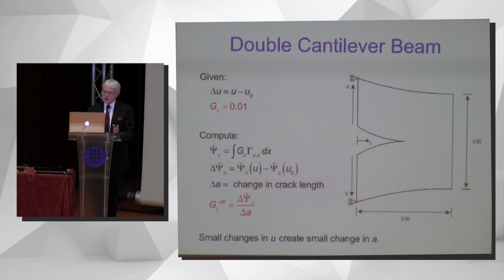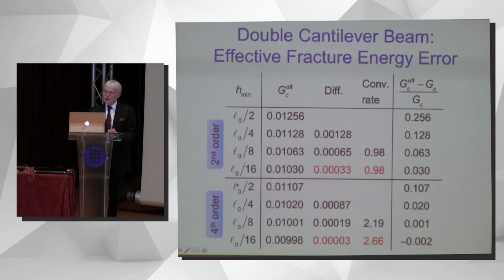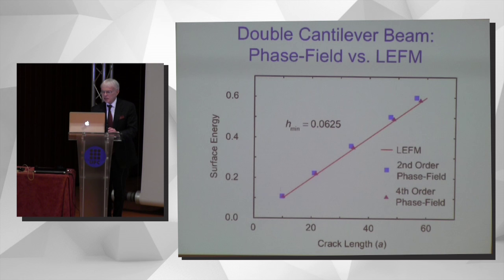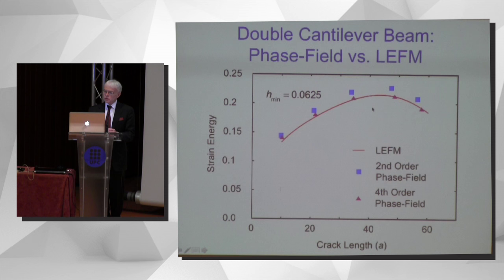Looking at the double cantilever beam — a quasi-static configuration with an initial crack opened by increasing displacement — solved on a hierarchically refined C1 continuous quadratic B-spline mesh with L0 equal to 0.5. If we refine systematically, we get a convergence rate with the second-order theory of 1 for the surface energy, and with the fourth-order theory approaching 3, as in the one-dimensional example. Comparing with linear elastic fracture mechanics on a fine mesh, the second-order theory results are quite good, and the fourth-order theory is a little bit better. For the strain energy, the fourth-order theory is considerably better.